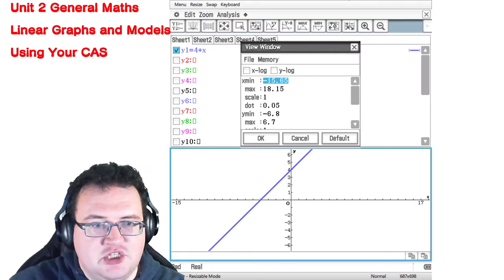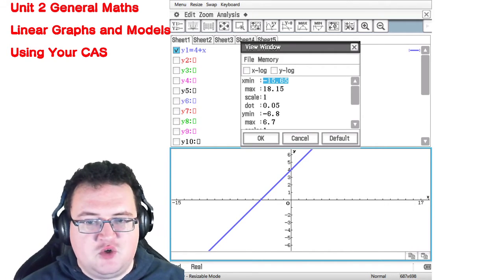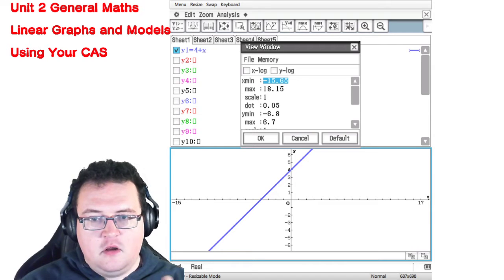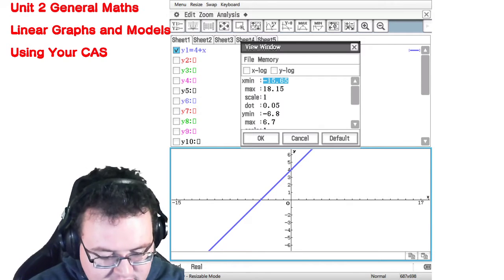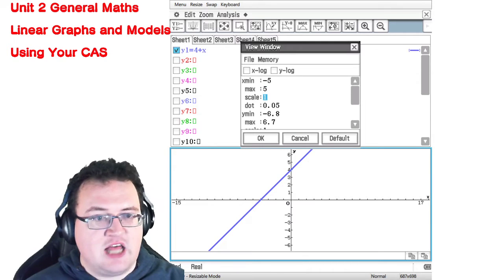The question out of the textbook that asks you to do things with 4 plus x wants you to graph values between minus 5 and 5. So your x value is going to be minus 5, your x max is going to be 5, your scale is still going to be 1.